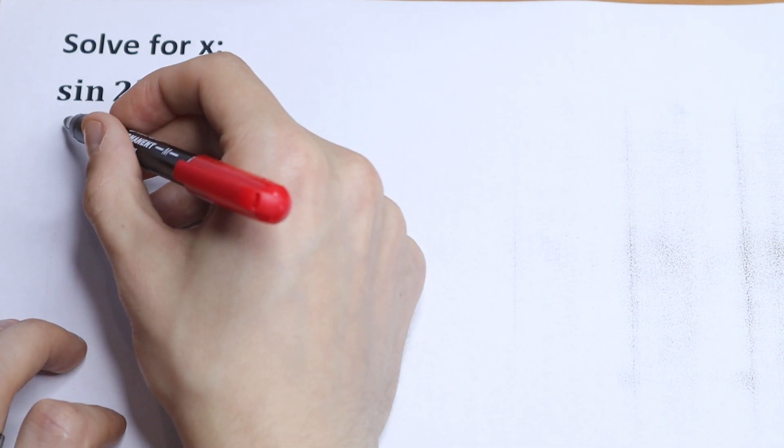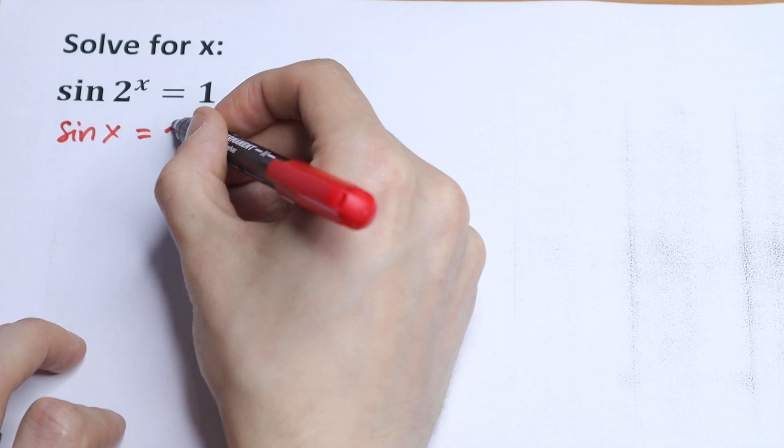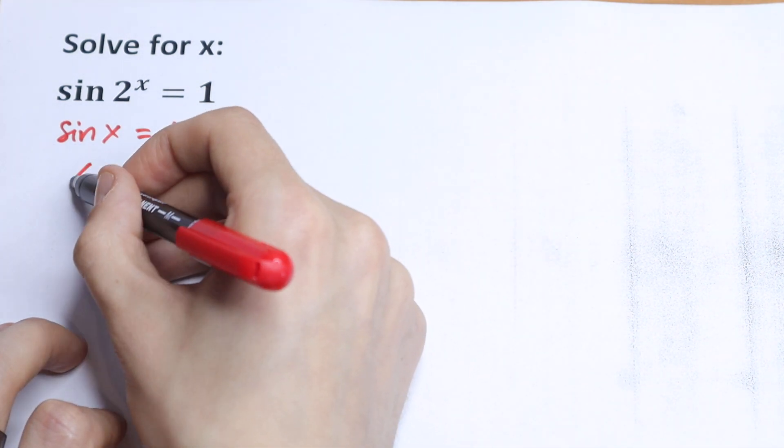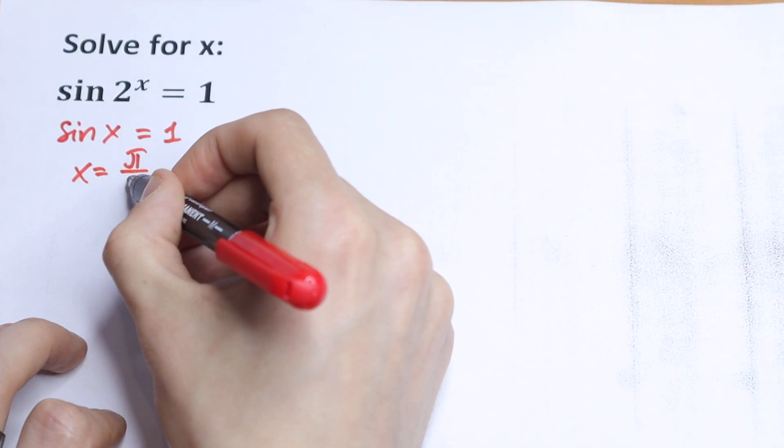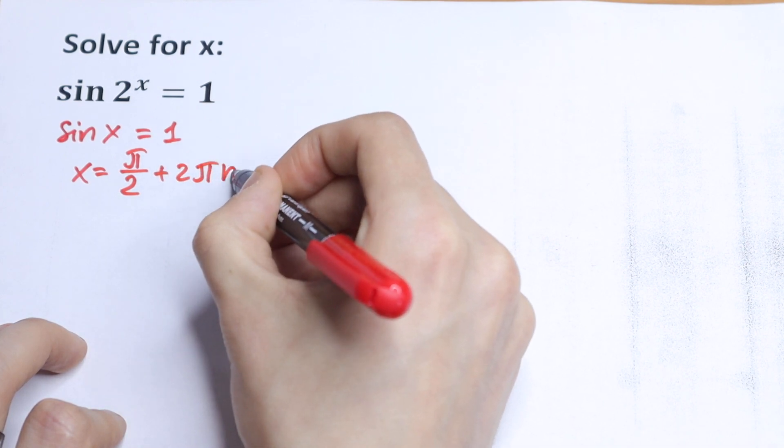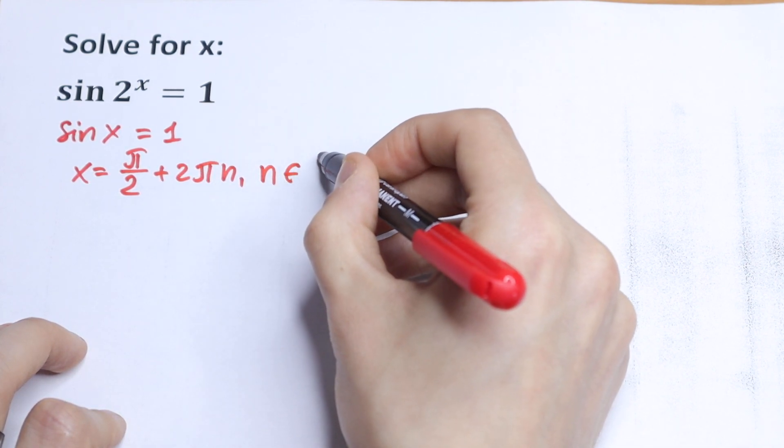Because we know that if we have sin x = 1, our x will be equal to π/2 plus a period 2πn, n ∈ Z.